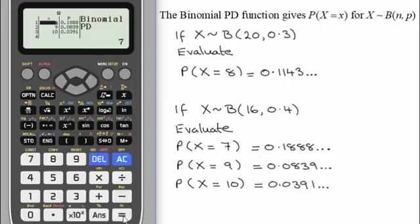But by pressing equals here, you'll see that we've got our three values here, illustrated in this column. So that's nice and quick when you've got quite a lot of probabilities to work out for the same distribution.